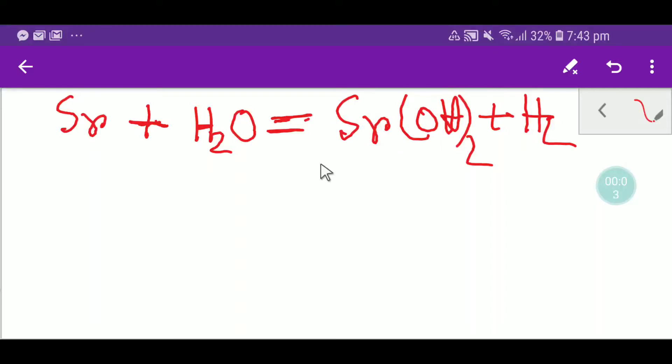Welcome to Chemistry Tutorial 360. Today we are going to balance this equation. We have here strontium plus water yields strontium hydroxide and hydrogen.